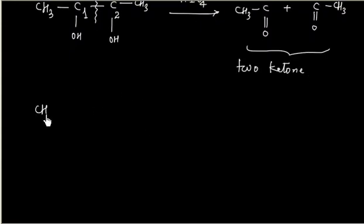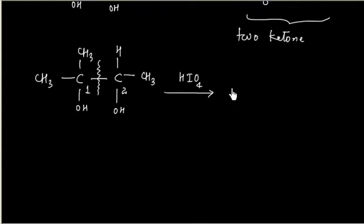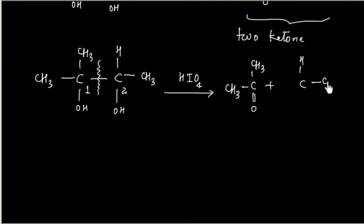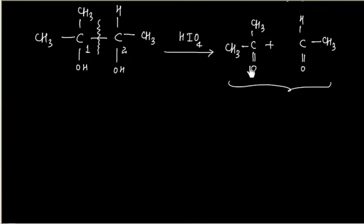If the reactant has carbon 1 bearing only hydrogen substituents and carbon 2 bearing alkyl groups, and this compound is treated with periodic acid, this bond will be broken, and we will get 1 aldehyde and 1 ketone as products.